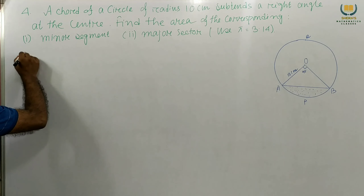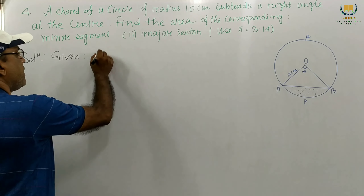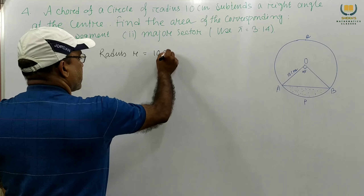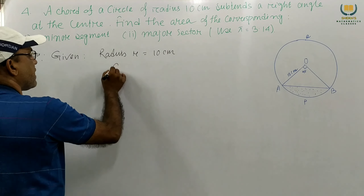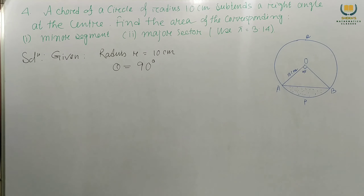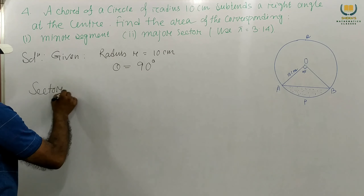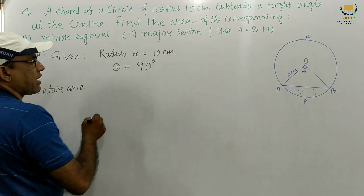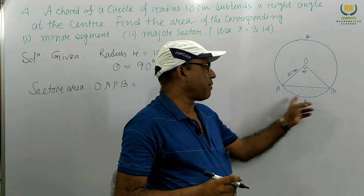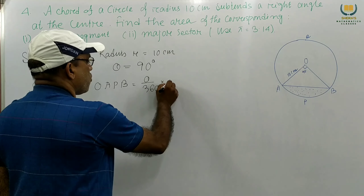Given: radius R equal to 10 centimeters, theta equal to 90 degrees. First we have to find the sector area. Sector area OAPB.